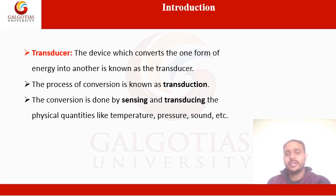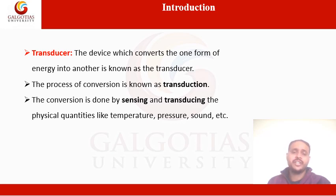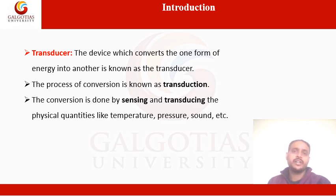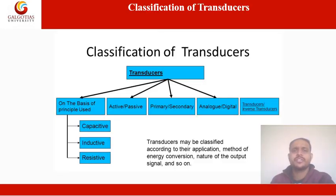A transducer basically has two main components: a sensing element and a transducing element. The sensing element senses and responds to the physical quantity or its rate of change. In the transducing element, the output of the sensing element is passed on and converted from a non-electrical signal into a proportional electrical signal — which may be voltage, current, frequency, or any other electrical quantity.